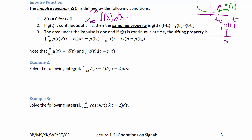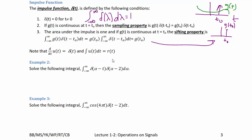The sifting property states that the integral from −∞ to +∞ of g(t)·δ(t − t₀) dt = g(t₀), because the area under δ(t − t₀) is 1. Note also that the derivative of a step function is an impulse function, and the integral of a step function is a ramp.